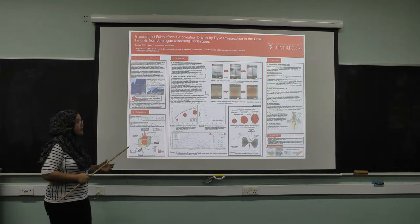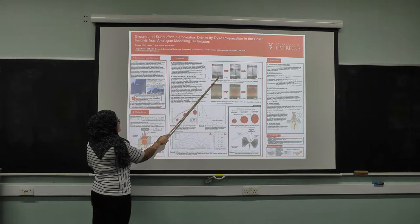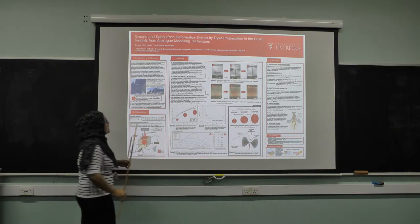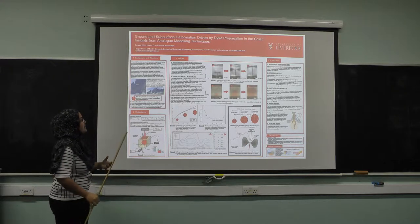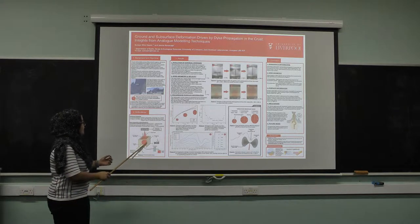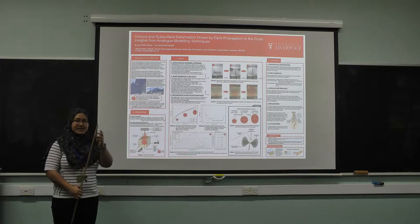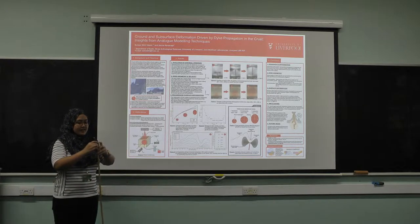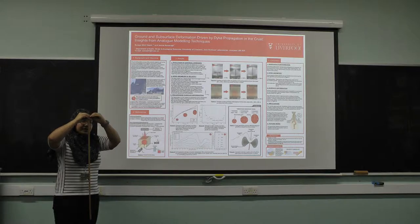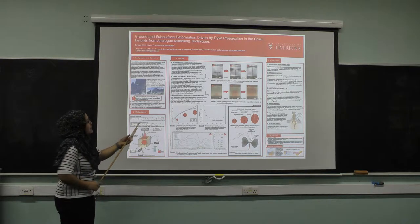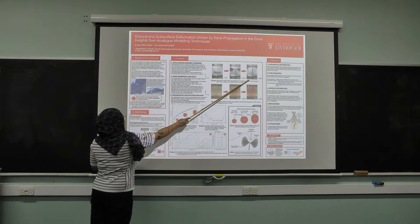So what do we get from this experimental setup? Here we have a set of three photographs taken at three different time steps. We can see through the polarizing film that there are bow-tie shaped stress fields. It starts off really small and localized right on the tips of the dike before growing wider in extent prior to eruption.